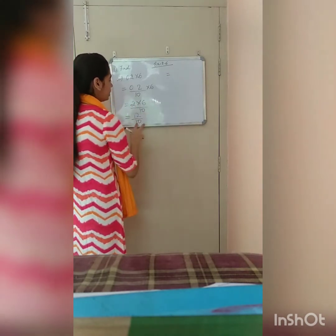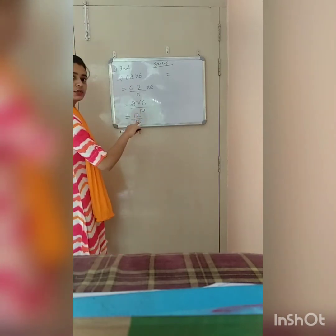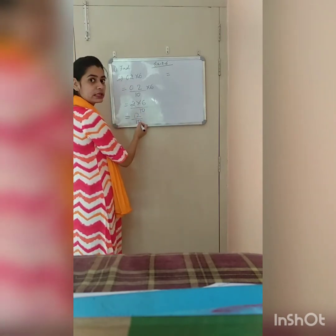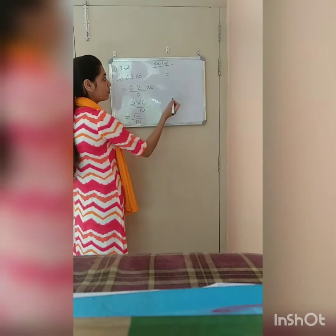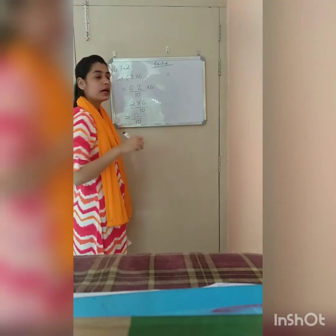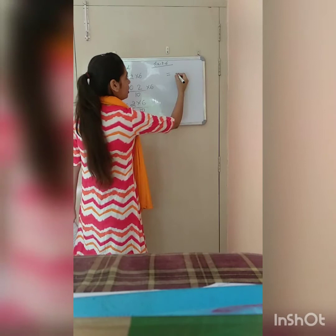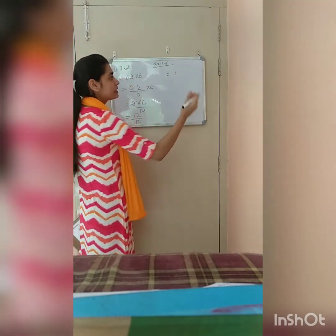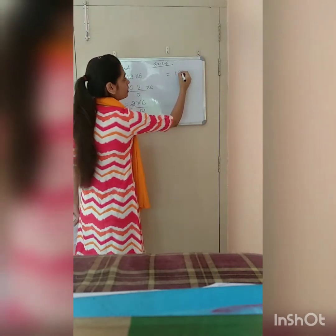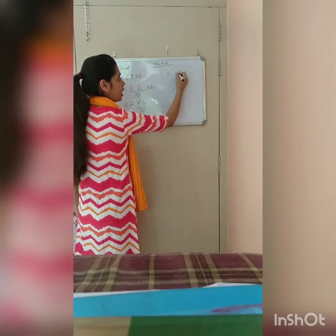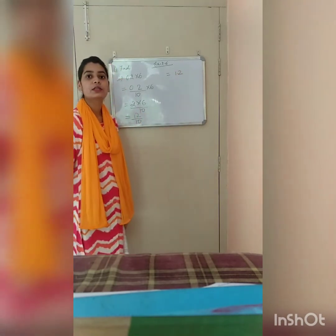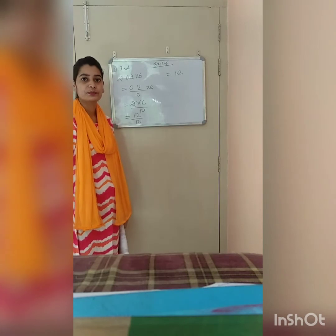Now we will convert this fraction into a decimal. There is 10 in the denominator, so we will put the decimal after 1 digit in the numerator, counting from the backward. So the answer is 1.2.